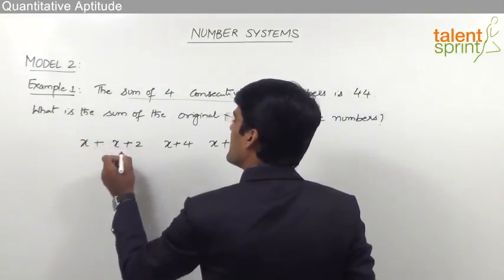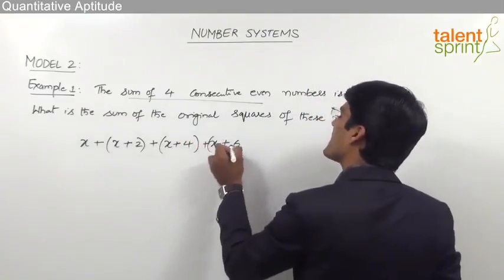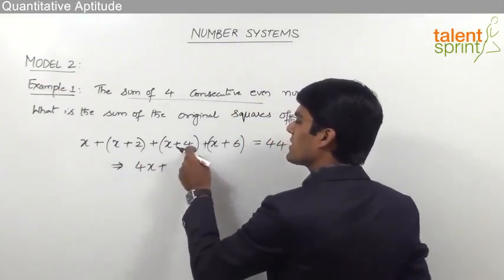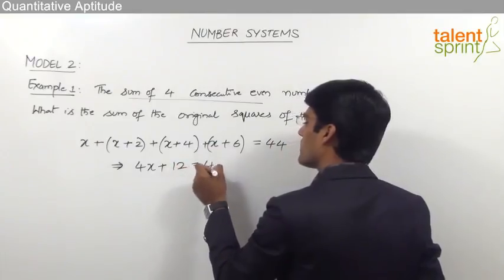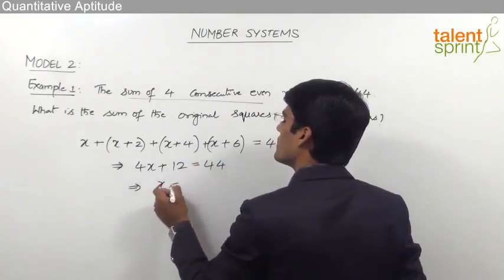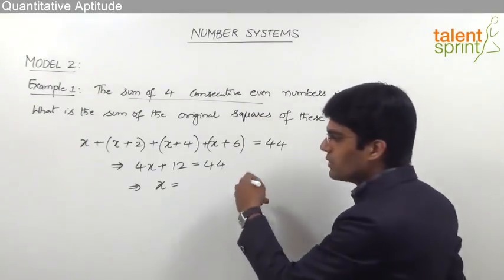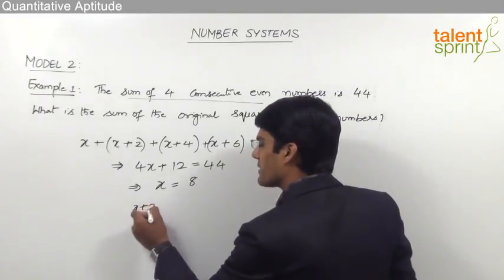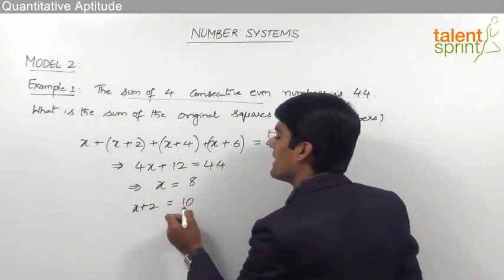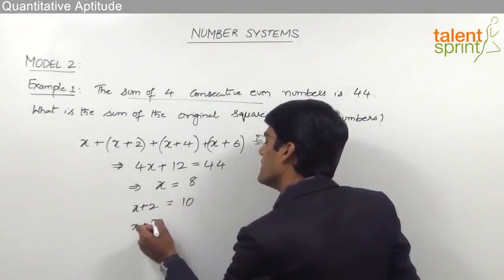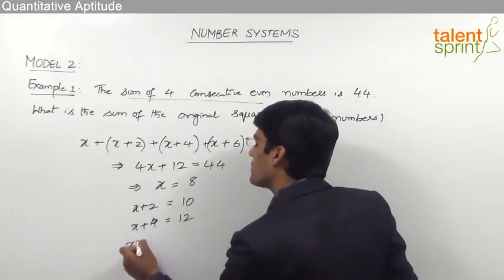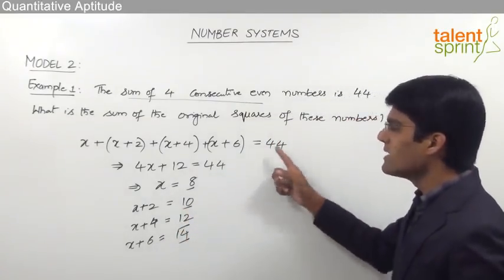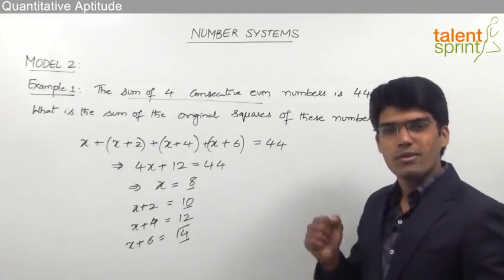The sum gives us: x + (x+2) + (x+4) + (x+6) = 44, which simplifies to 4x + 12 = 44, so x = 32/4 = 8. With x = 8, the four consecutive even numbers are 8, 10, 12, and 14. The sum of all four numbers is indeed 44.